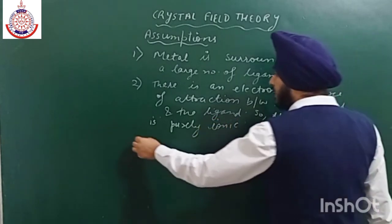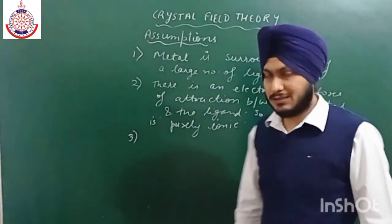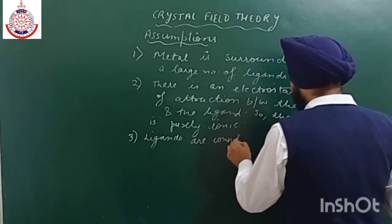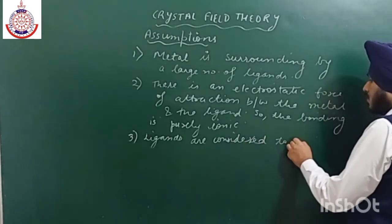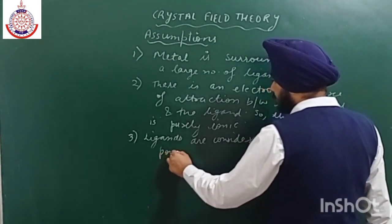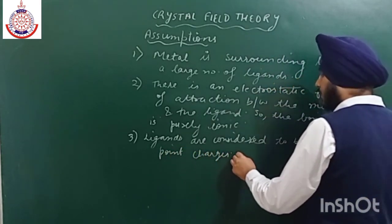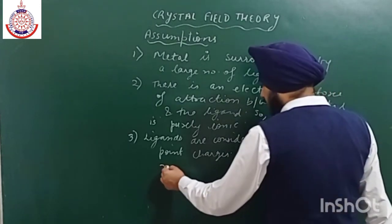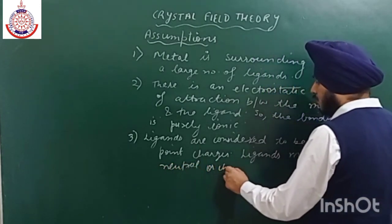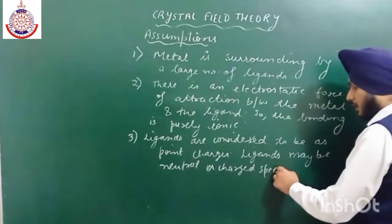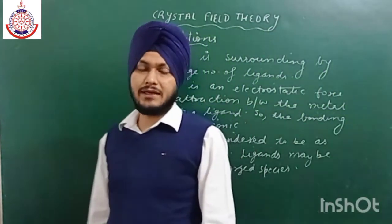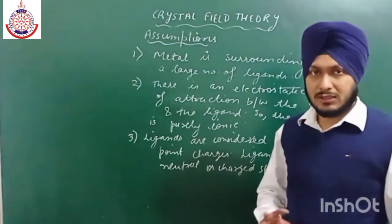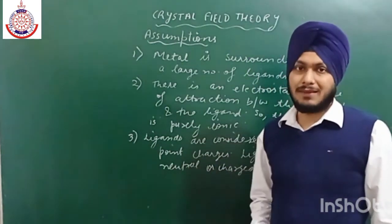Regarding the nature of ligands, ligands are considered to be as point charges. Ligands may be neutral or charged species. If a ligand is neutral, then the negative part of the dipole is oriented towards the metal ion, because the metal ion is positively charged. So the negative part due to dipole interaction is towards the metal atom.